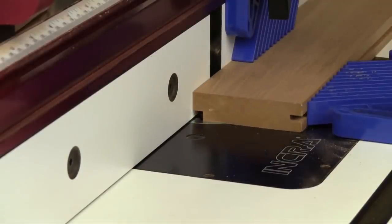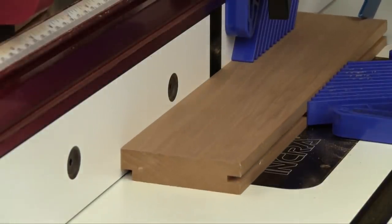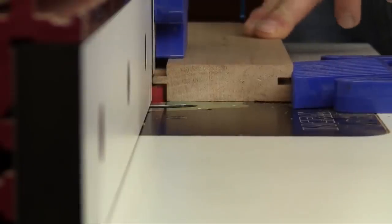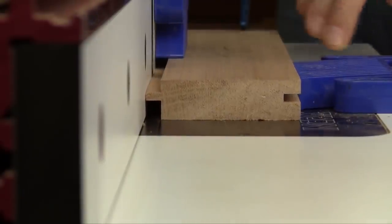Cut this shoulder and cheek on all the slats. Then flip the work pieces end for end and cut the second shoulder and cheek, adjusting the cutting height if necessary.